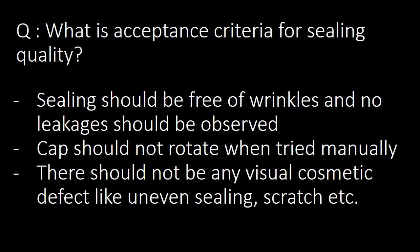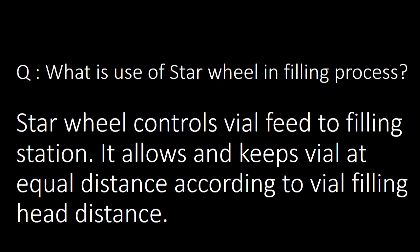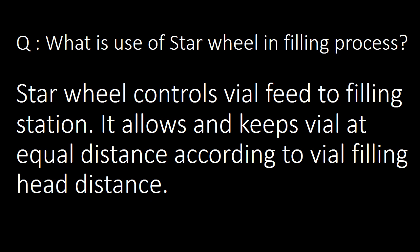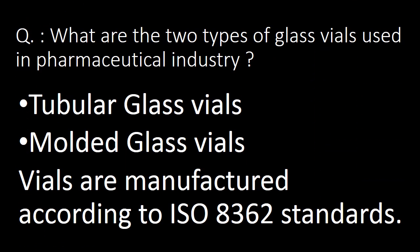What is the acceptance criteria for sealing quality? Sealing should be free from wrinkles, no leakages should be observed, the cap should not rotate when tried manually, and there should not be any visual cosmetic defect like uneven sealing or scratches. What is the use of a star wheel in the filling process? The star wheel controls vial feed to the filling station and keeps vials at equal distance according to the filling head distance.